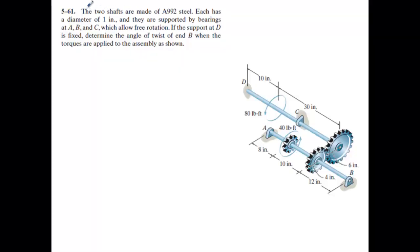This is problem 5-61. In 5-61, you have two shafts made of A992 steel. Each has a diameter of 1 inch and are supported by bearings at A, B, and C, which allow free rotation. So these cannot take any torque here. The support at D is fixed. Determine the angle of twist. The critical thing is we're going to find the angle of twist at B. So we're looking to find out how much twist is at B.